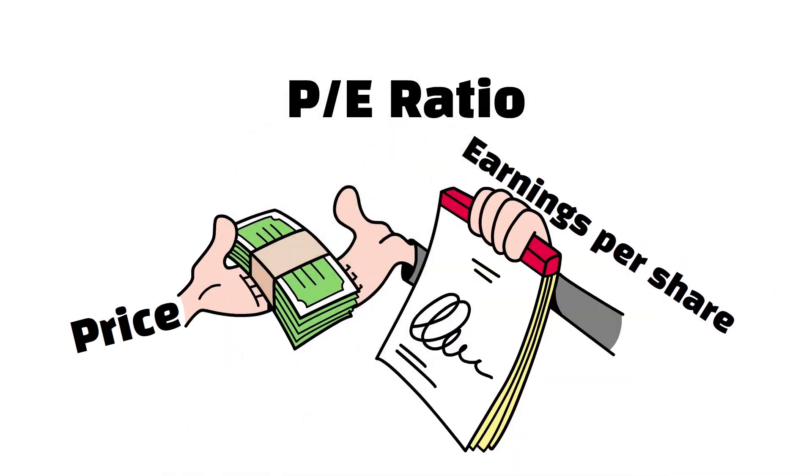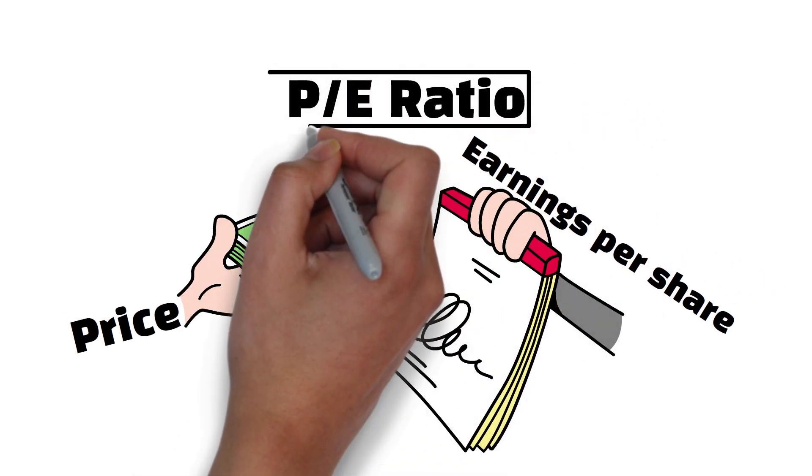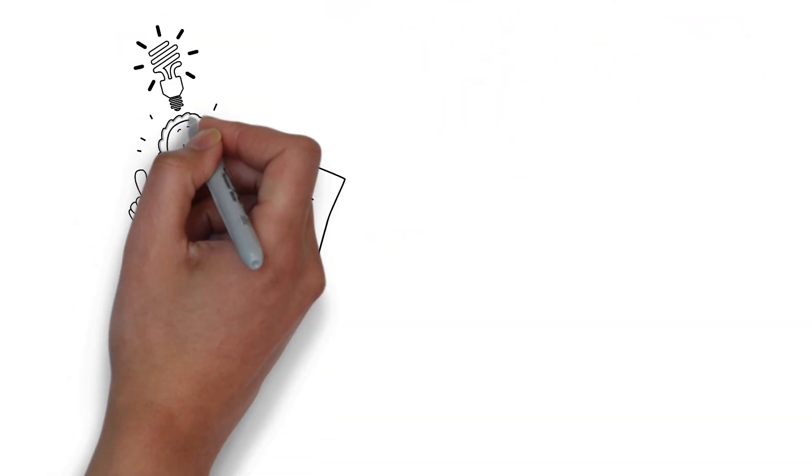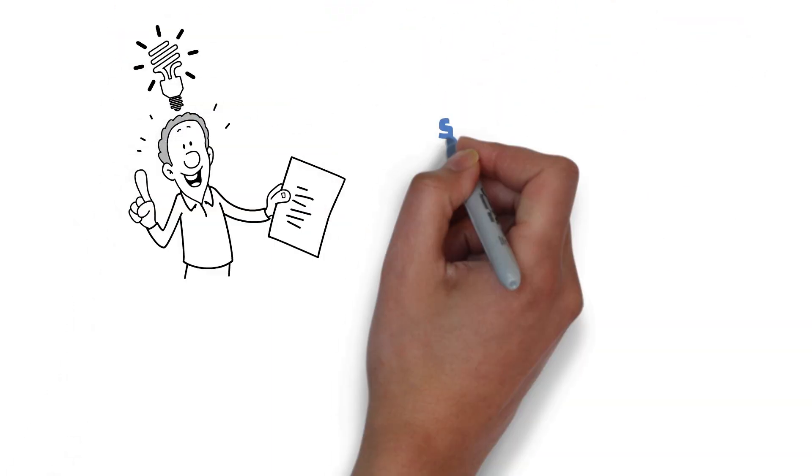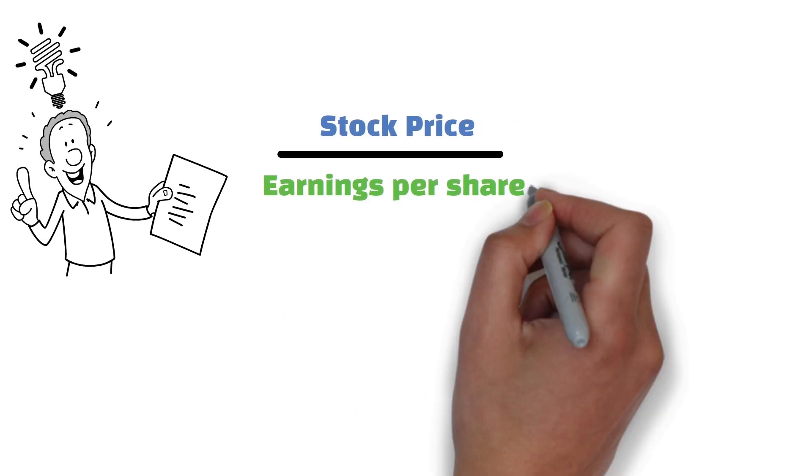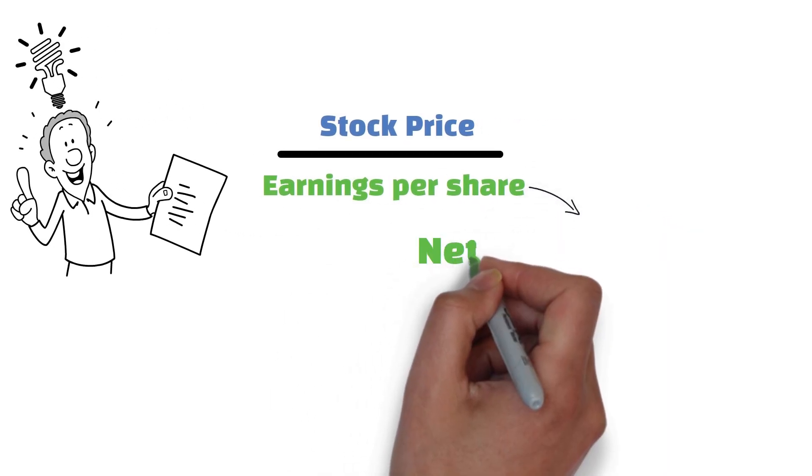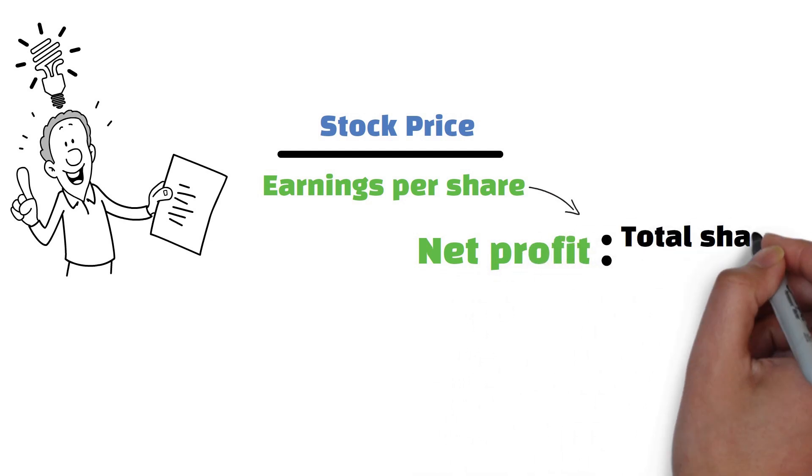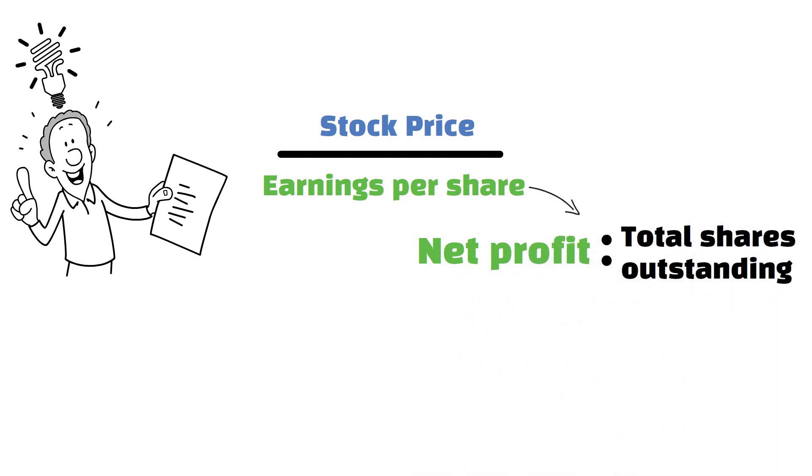It's similar to the price per pound ratio we use while comparing different types of meat at the butcher shop to find the cheapest option. While the P-E ratio is one of the most popular multiples, there are so many different multiples that investors can use to evaluate stocks. To determine the P-E ratio, you must divide the stock price by the earnings per share. The earnings per share is simply a ratio between the net profit made by a company and the total shares outstanding.